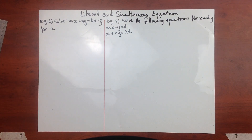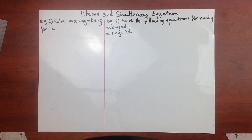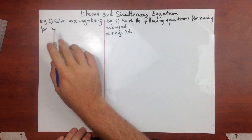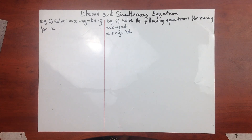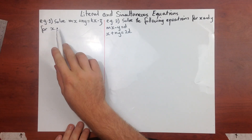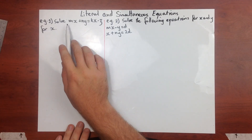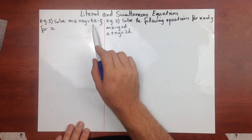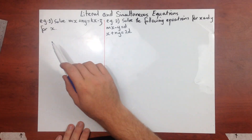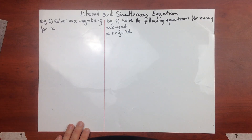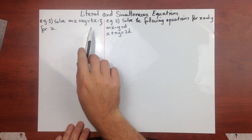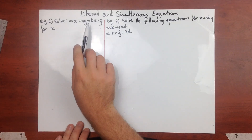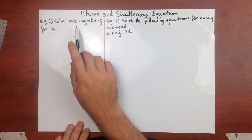In this tutorial we're going to look at literal and simultaneous equations with some examples. Our first example is a literal equation: solve mx plus ny equals kx minus z for x. Our first step is always to get our x terms on the same side.